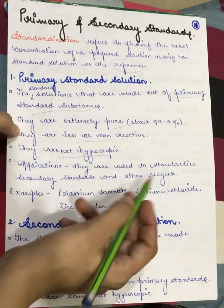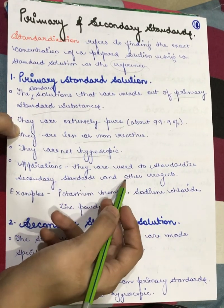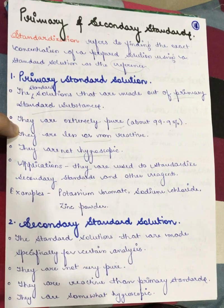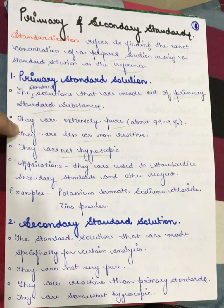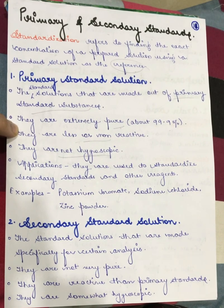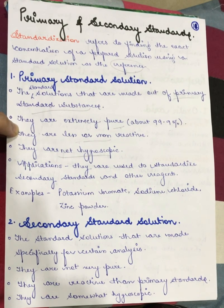They are used to standardize secondary standards and many other reagents as well. Examples of primary standards include potassium bromate, sodium chloride, zinc powder, etc.